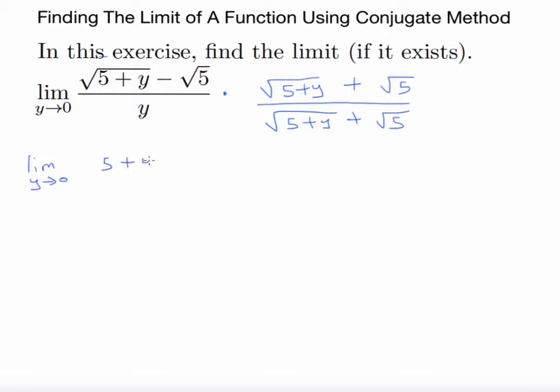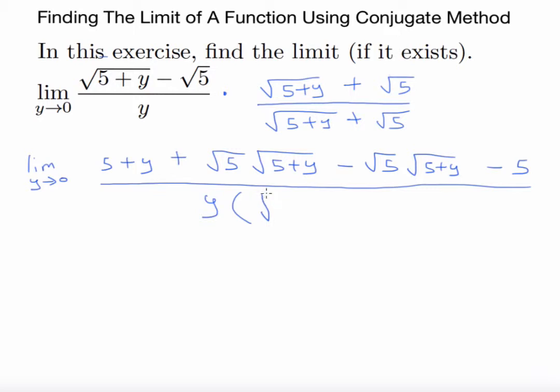5 plus y, then you have this times this which would be √5 times √(5+y). Now you have minus √5 times this, that will be minus √5 times √(5+y), and minus √5 times positive √5 is going to give you minus 5, all over y times (√(5+y) + √5).